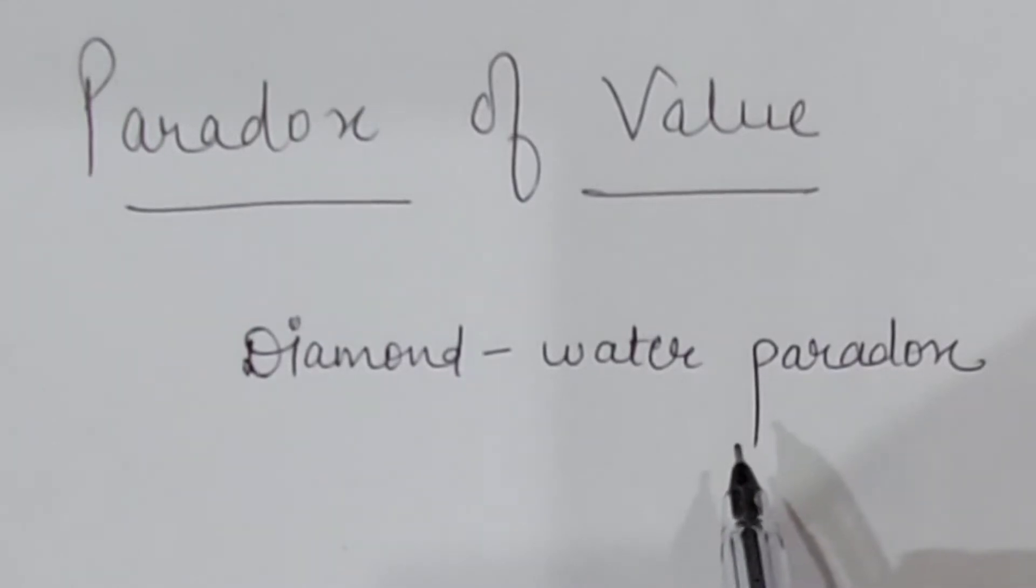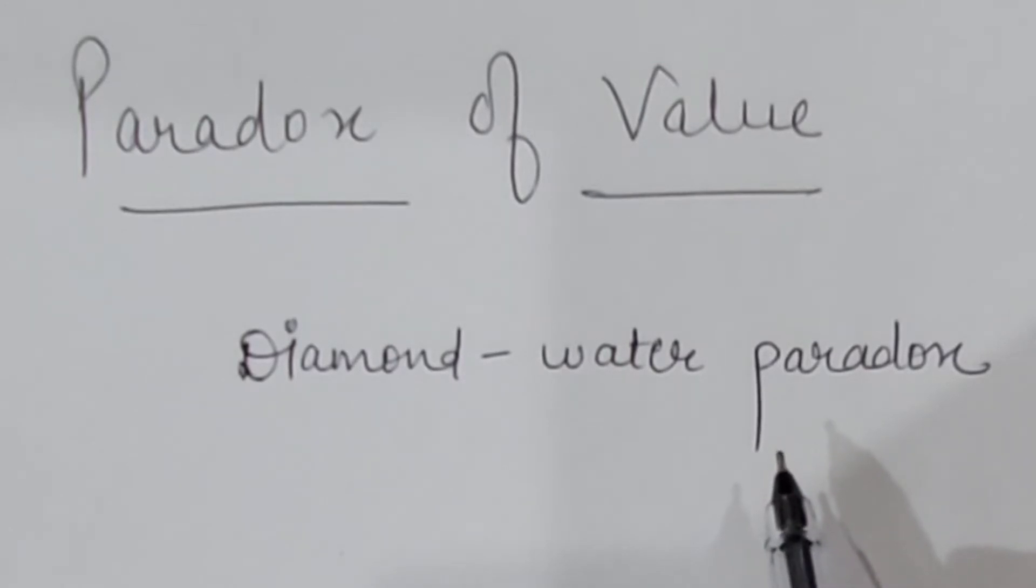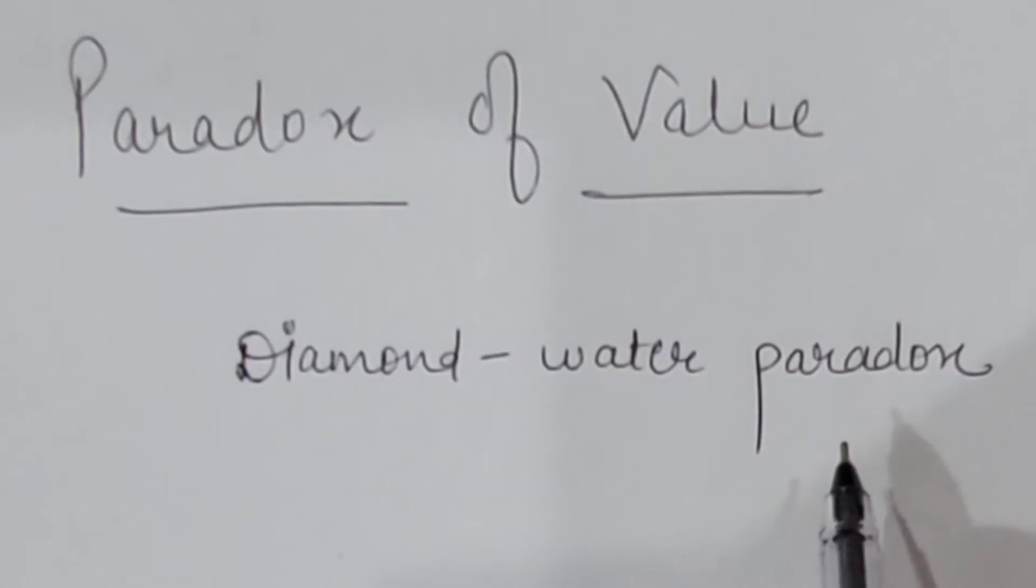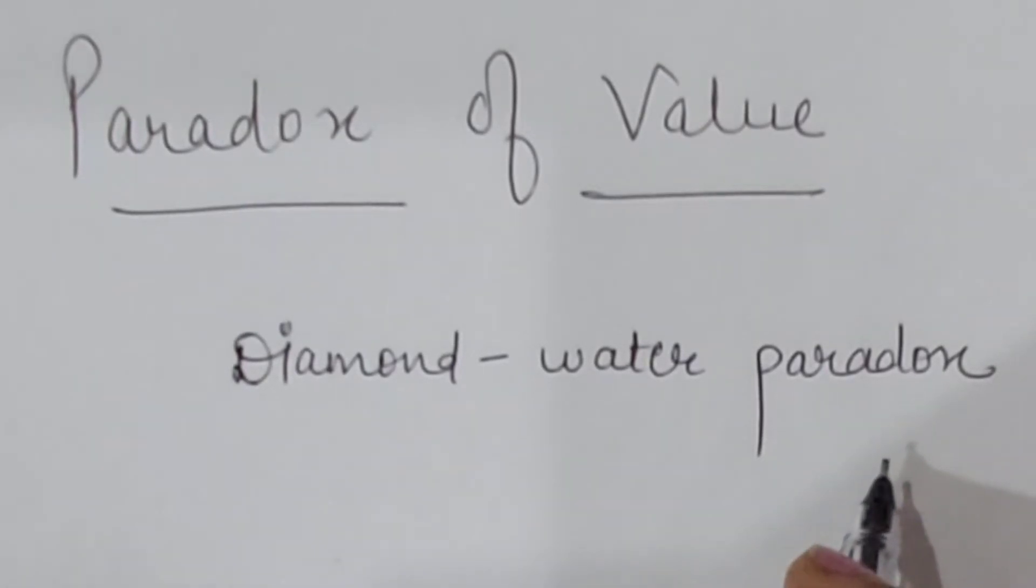Many economists assumed that a product's price is equivalent to total utility but practically it is not true. They assumed that if a good has more total utility then its price would be more, but practically it is not at all true.